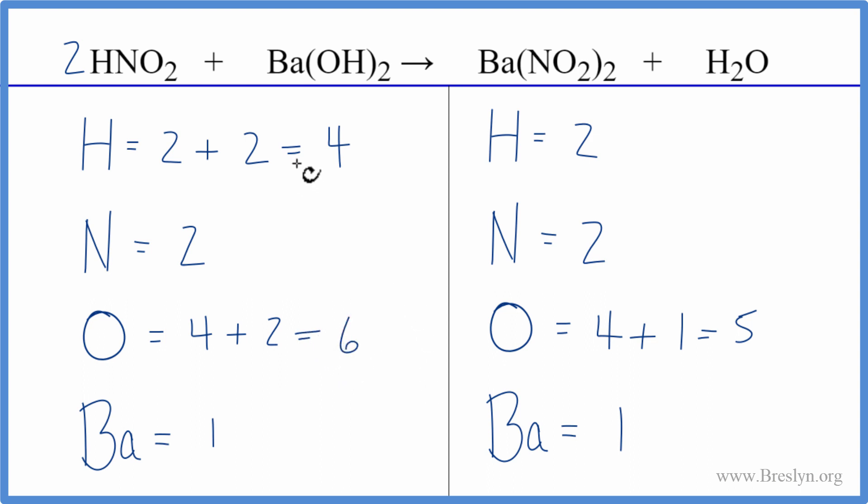At this point, let's balance the hydrogens. So we have four here and two here, so we need to double this number. We'll put a two in front of the H2O. Two times two, that'll give us four. So we've balanced the hydrogens.